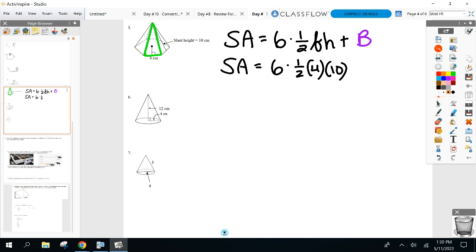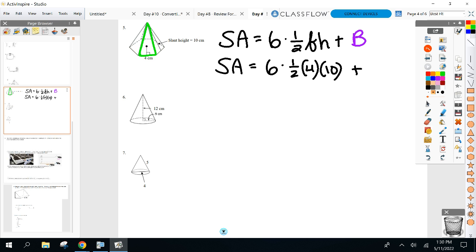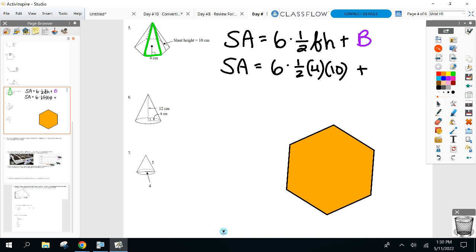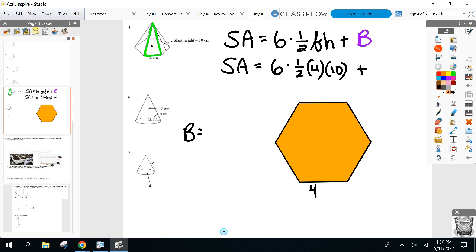That's what we talk about with slant height. Mission impossible height - the altitude that comes straight down from the apex. Alright, we got to do some work now. Here's where the work comes in. Let me bust out a hexagon here. Help me find what capital B is here. How do I find the area of that hexagon just given a side of four? Going back to last unit, dig up a little bit of last unit.